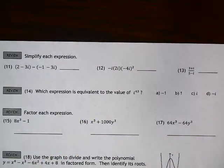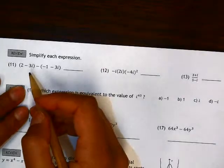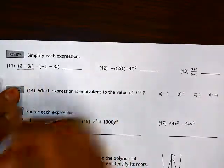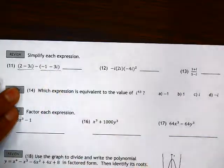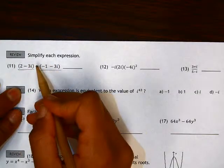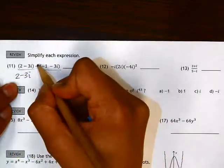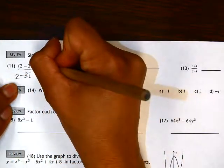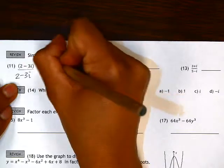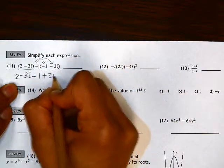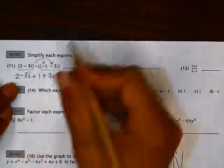So on 11, we have this expression, this complex number minus this complex number. This is not multiplication, we have a subtraction here. So 2 minus 3i, this negative, you could think of it as a negative 1 being multiplied by each of these terms. So this becomes plus 1 plus 3i. Combining like terms, we get 3.